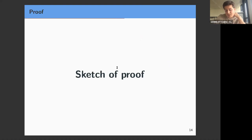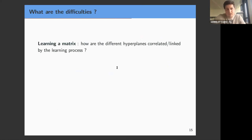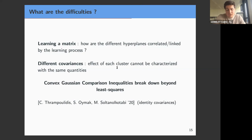For the remaining time I would like to talk a bit about the sketch of proof and why this was a challenging proof. What are the difficulties here? We are learning a matrix and so implicitly we need to understand how the different hyperplanes are correlated by the learning process and this is something that's non-trivial. The second thing is each cluster is different, we want to allow different covariance matrices and so intuitively we cannot use the same quantities to characterize the effect of each cluster. Actually this was observed in a recent paper by the group of Christos Trampoulidis where they showed that the convex Gaussian comparison inequality, this nice family of proof that I've talked to you about earlier in this talk, they actually break down beyond the least square case for a multi-class classification problem.